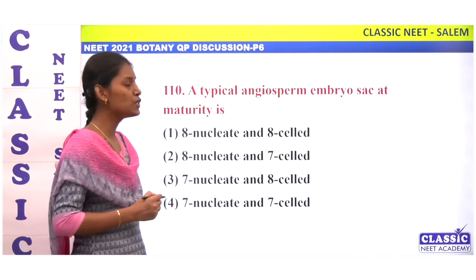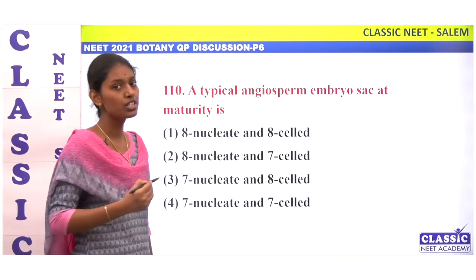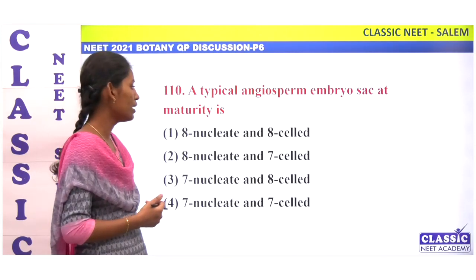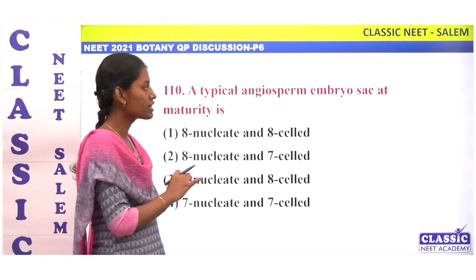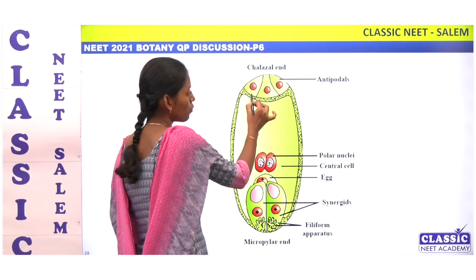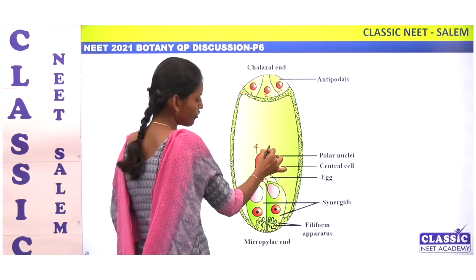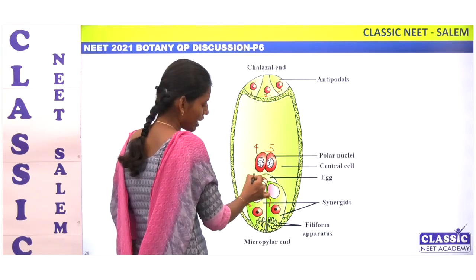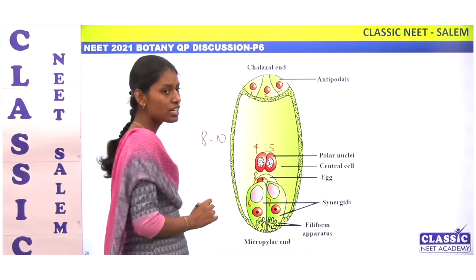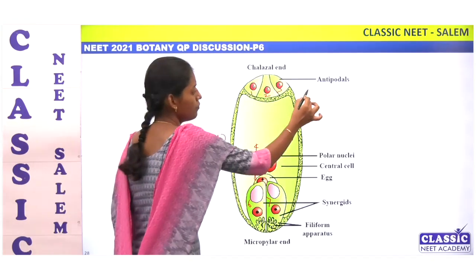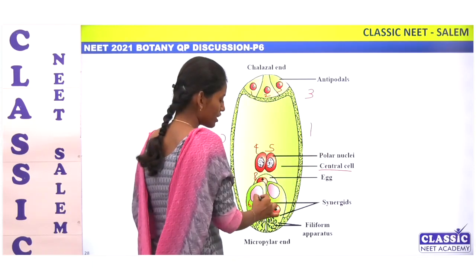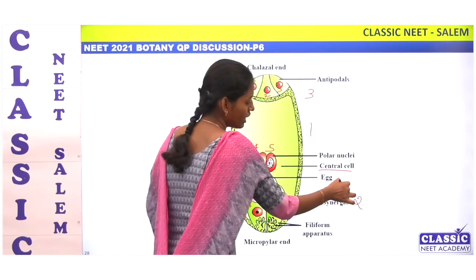A typical angiosperm embryo sac at maturity contains how many cells and how many nuclei? In a typical angiospermic embryo sac, you can see a central cell, two synergids, and one egg cell.